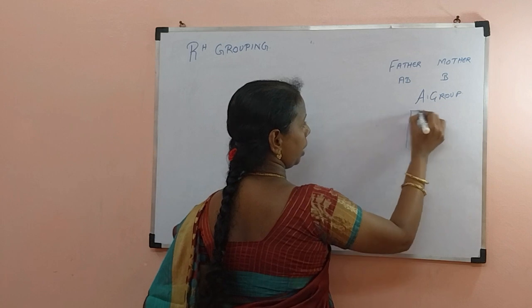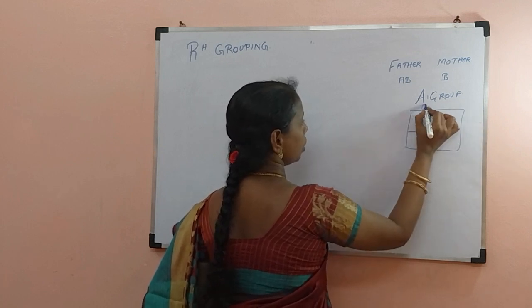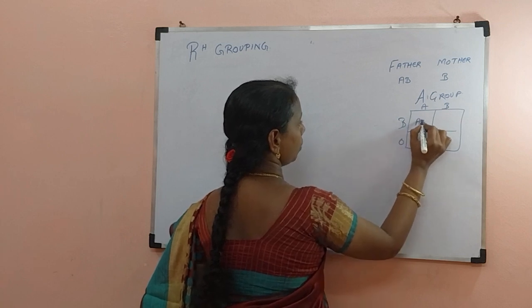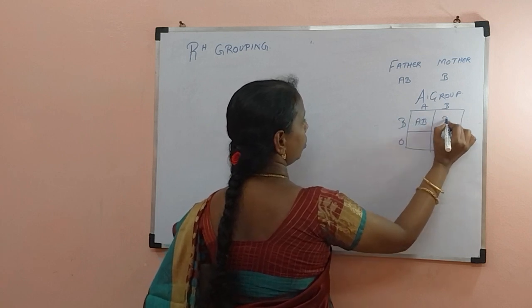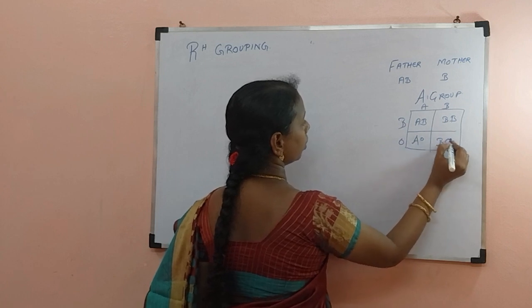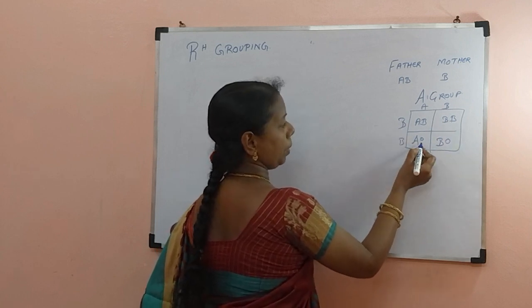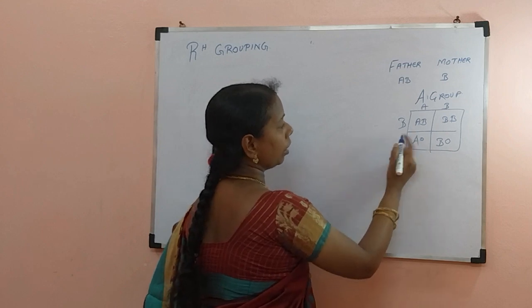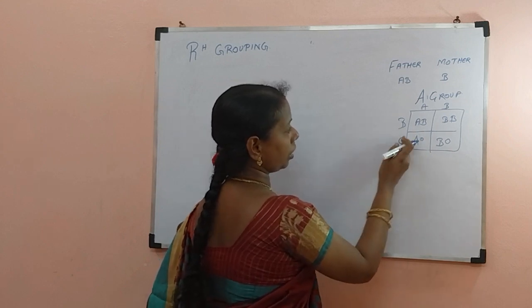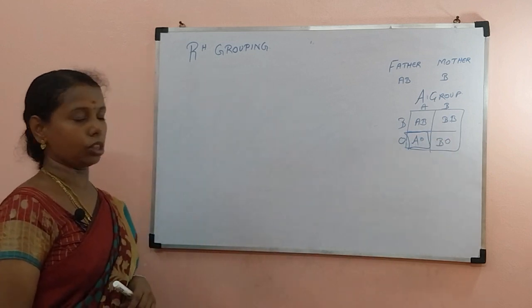We can make a checkerboard to work out this question. So A, B and B and O — giving AB, BB, A and B. If it is B, then AB only will come. So because the mother is heterozygous, A blood group is possible — that is the correct answer.